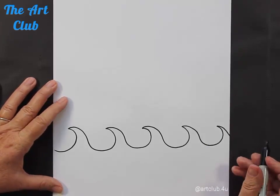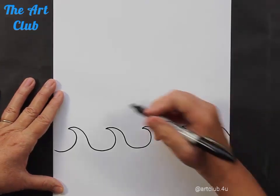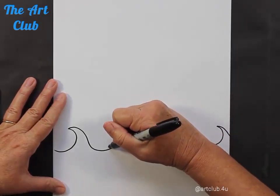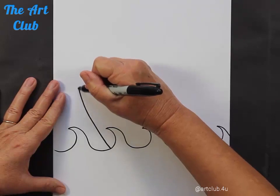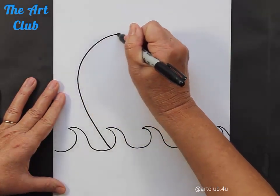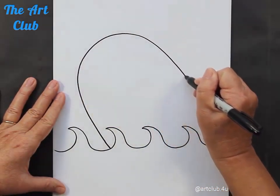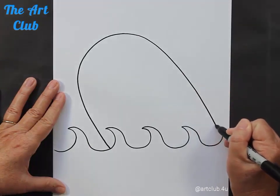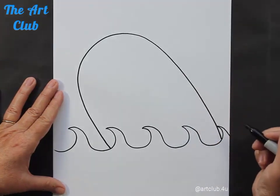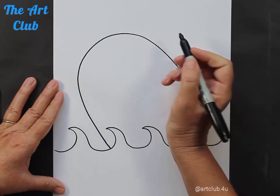So for our actual narwhal, we are going to make a shape. It's kind of like a U shape that's upside down but that's also going to the side, just like that. Right here at the top, we're going to put his horn.